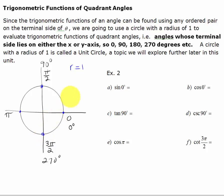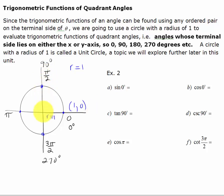If the radius is 1, think about what the ordered pairs would be. Pause the video and see if you can fill in the four ordered pairs. At 0 degrees, that ordered pair would be 1, 0. At 90 degrees, the x-coordinate is 0 and the y-coordinate is 1. At pi, or 180 degrees, the ordered pair would be negative 1, 0. And at 3 pi over 2, or 270 degrees, the ordered pair would be 0, negative 1.